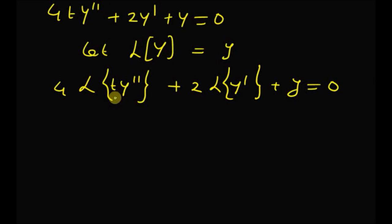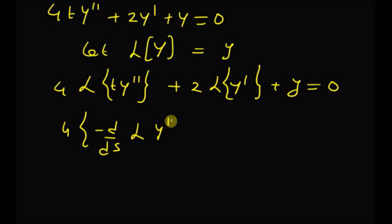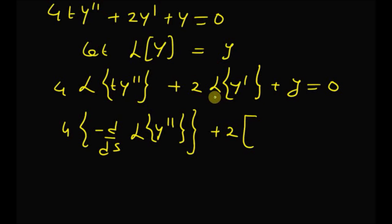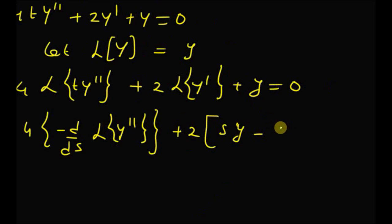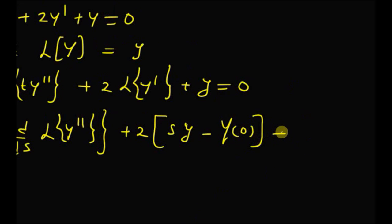By using the property that the Laplace transform of t times a function equals −d/ds of its Laplace transform, we get 4 times [−d/ds · L{y''}]. Then, using the Laplace transform property for a derivative, L{y'} = s·y − Y(0), where Y(0) is the initial value of the function.